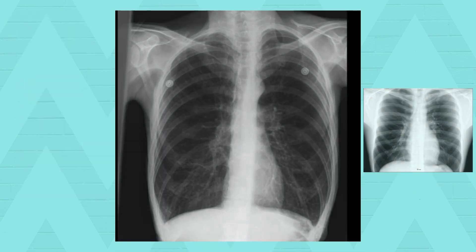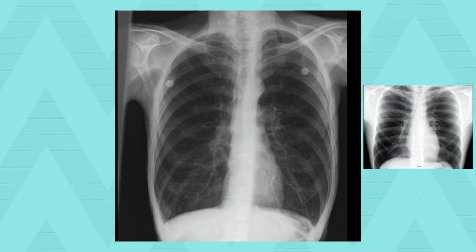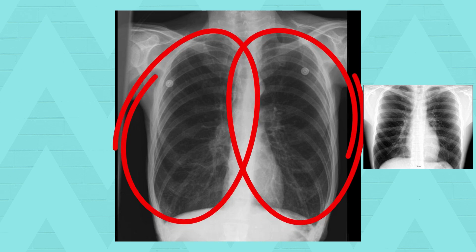We're now looking at an X-ray with two pairs of lungs. On the left side you will see a pair of lungs with COPD, and on the right side it's a healthy pair of lungs. The first thing I notice is that the COPD lungs are hyperinflated — the lungs appear overexpanded, and you can see more visible anterior ribs, more than six or seven above the diaphragm, indicating decreased lung volume.